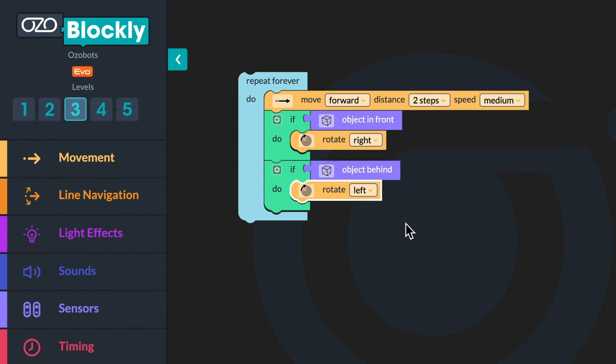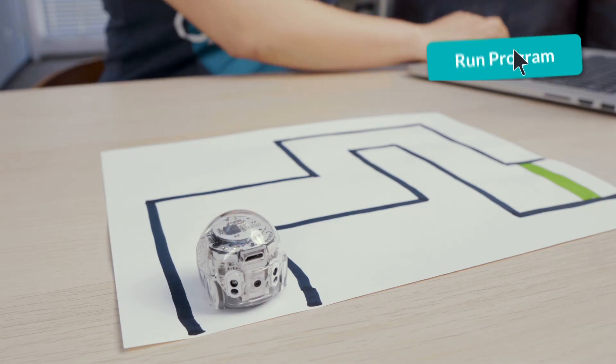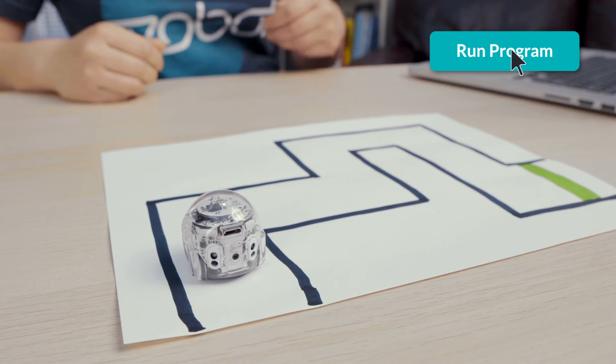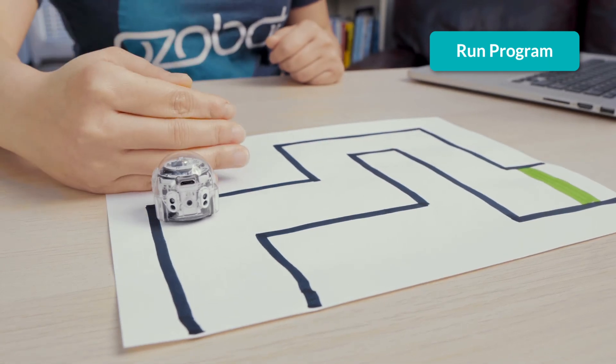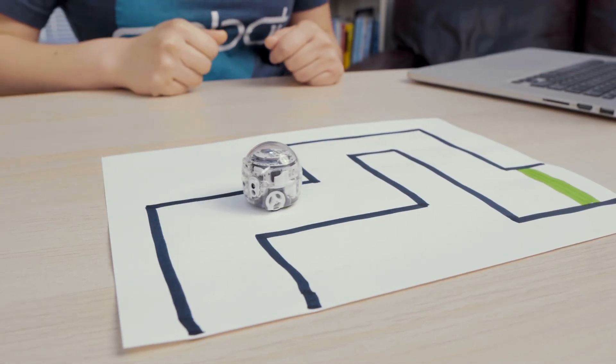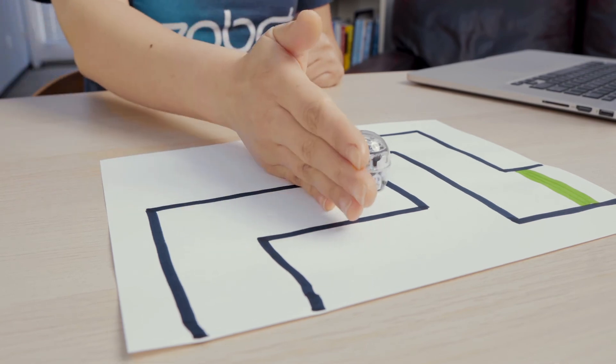Time to test your code. Your bot should always move forward unless it senses your hands. If it senses your hand in front, it should turn right. If it senses your hand in back, it should turn left. Let's watch my bot in action. I'm going to put my bot at the beginning of the maze and connect my bot to Ozoblockly. When I click Run Program, my bot begins to move forward. I will now use my hands to tell the bot when and where to turn to get through the maze.